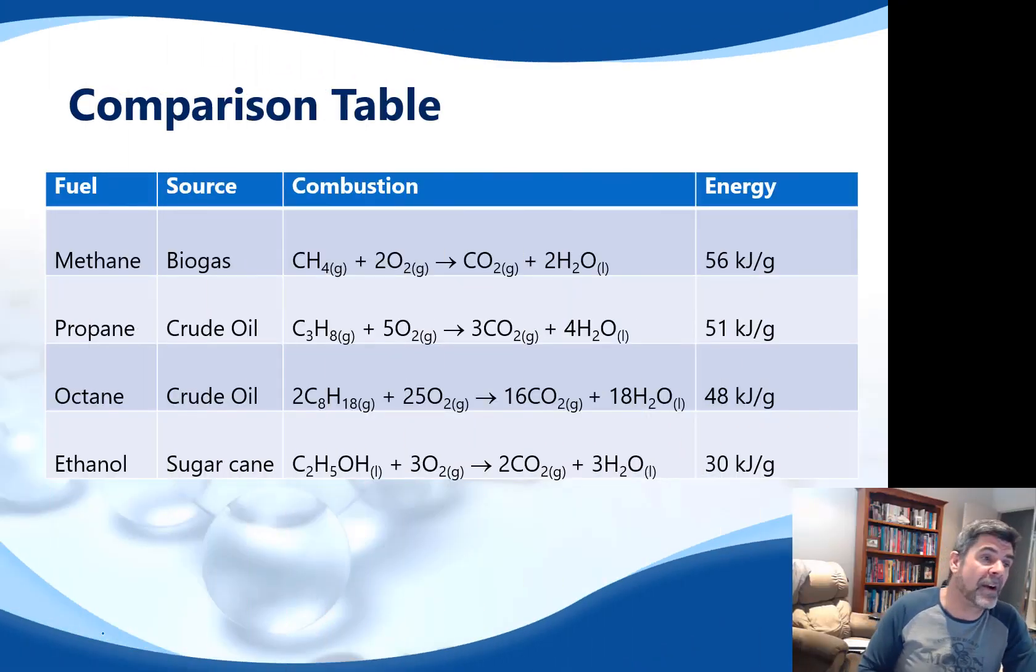So here is a comparison table. In this table, I've chosen four fuels: methane, propane, and octane. All of these are organic fuels obtained from fossil fuel sources, such as natural gas, crude oil, and even coal. Not necessarily any of these, but those are the three groups of fossil fuels.